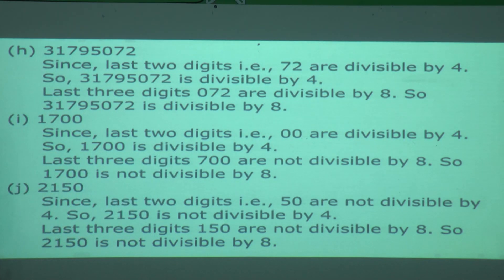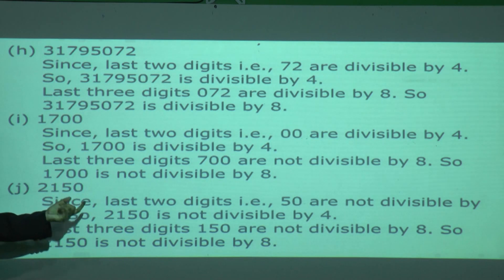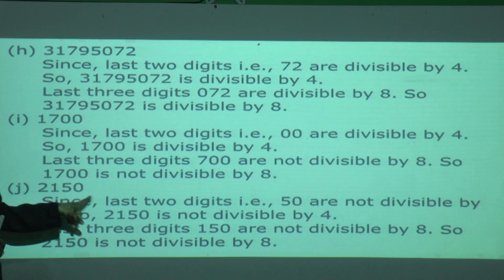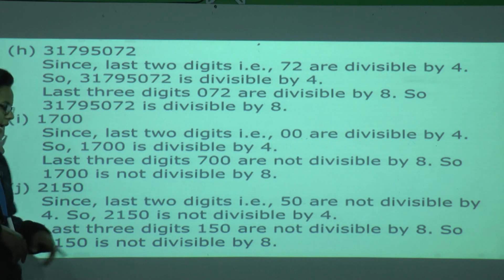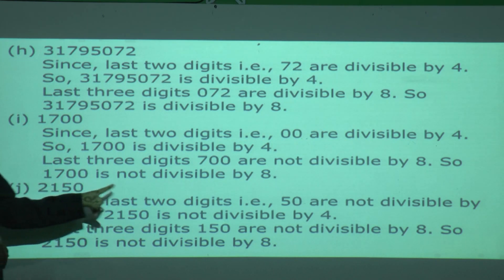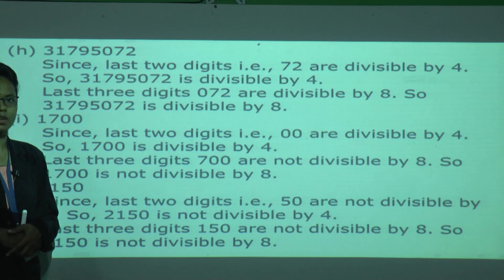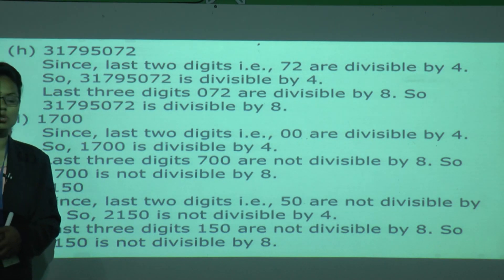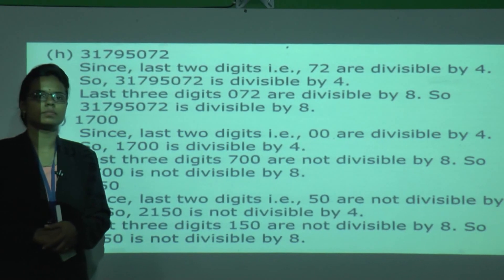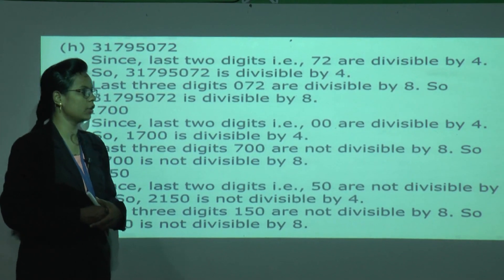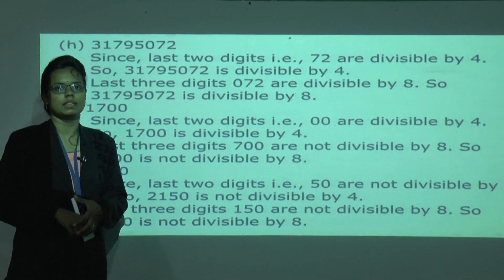For the number 2150: the last two digits — 50 — are not divisible by 4, so 2150 is not divisible by 4. The last three digits — 150 — are not divisible by 8 either, so 2150 is not divisible by 8. In this question, we have seen how to apply the divisibility rules for 4 and 8.